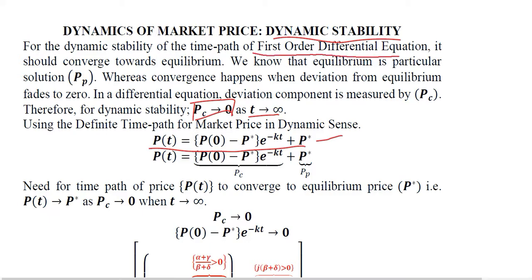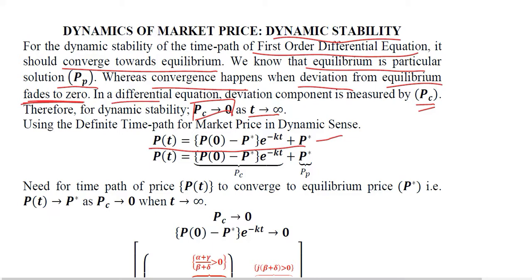We are talking about the time path of the first-order differential equation. If it is to converge towards the equilibrium, we have to consider that the particular integral is the equilibrium value. For convergence, we wish that the deviation from the equilibrium, represented by pc in this case, should fade to zero. The differential equation represents this deviation with pc, which is the complementary function of the equilibrium price.